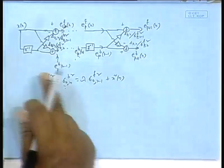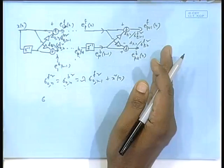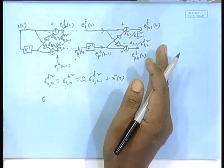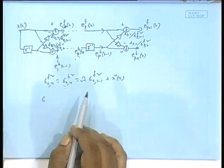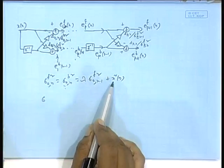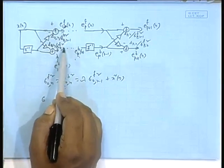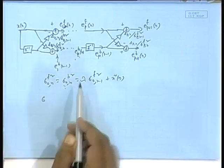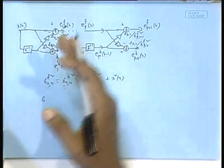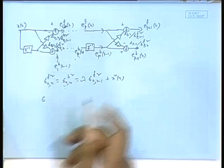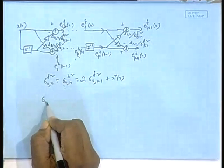How to obtain the sigmas for the subsequent stages? It becomes adaptive because data comes in. Data determines the two-norm squares of sigmas here, and from these sigma squares, recursively we obtain the sigma squares for the subsequent stages by those recursive equations.